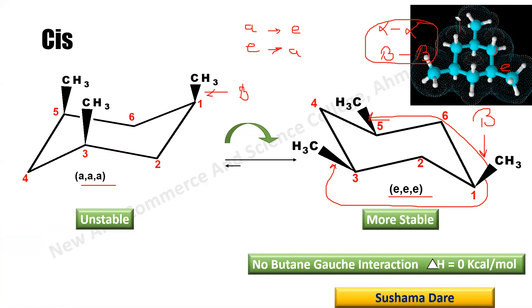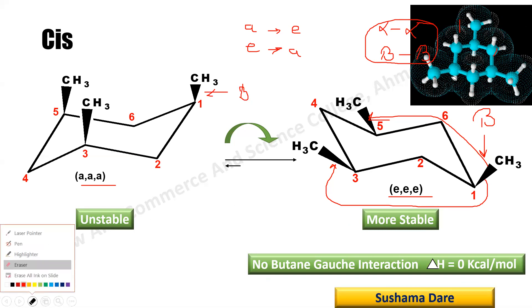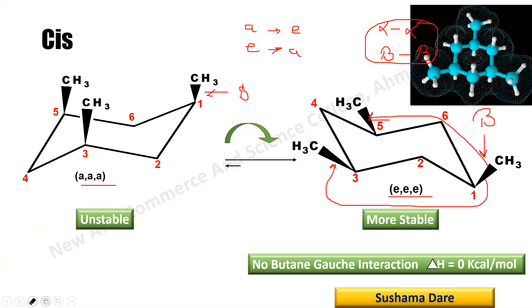This is the three-dimensional structure of the EEE conformer of cis-1,3,5-trimethylcyclohexane. You can see all three methyl groups are equatorial — this methyl group is equatorial, this one is equatorial, and this one is also equatorial.